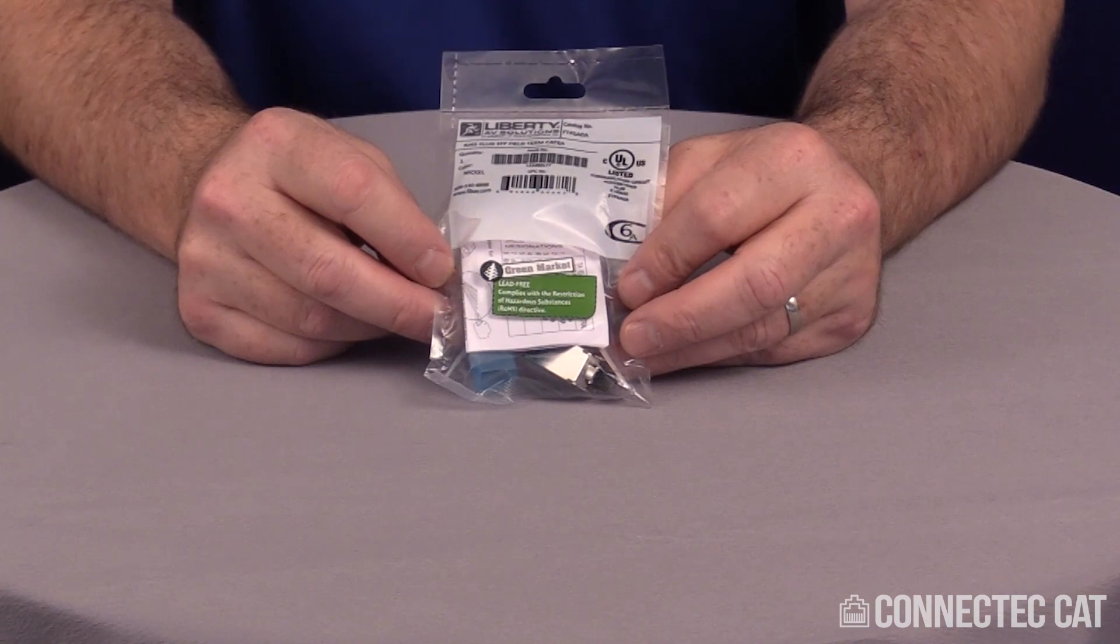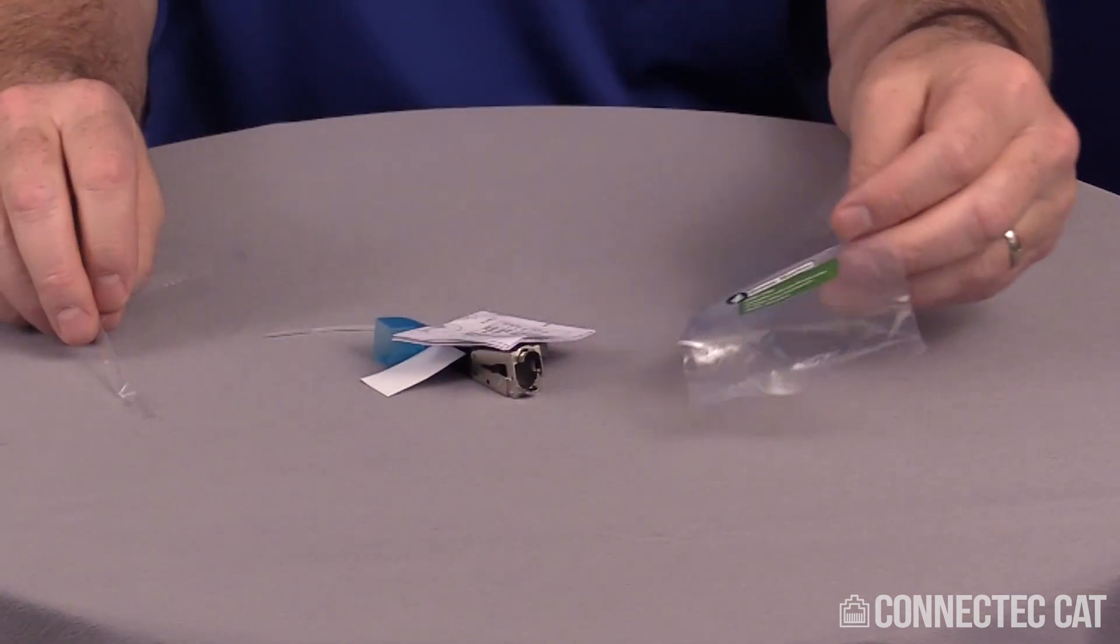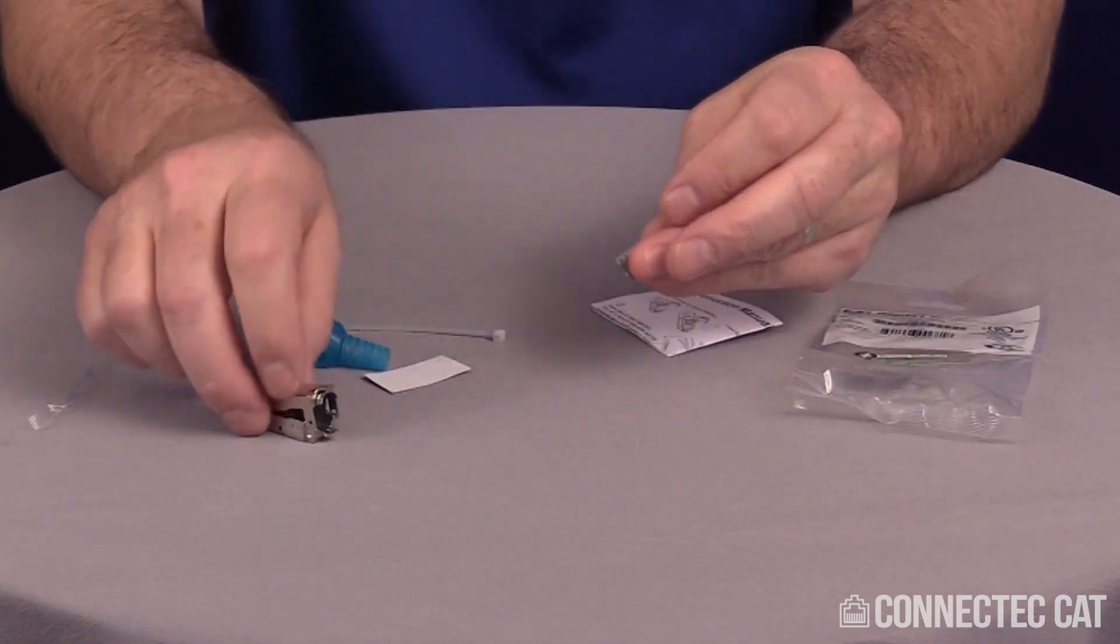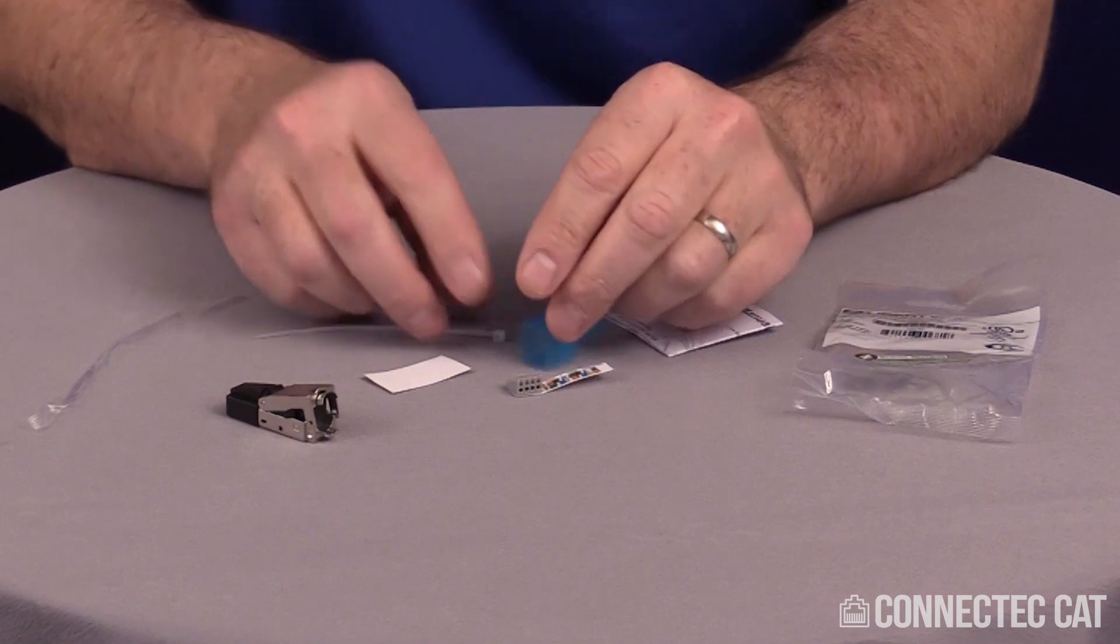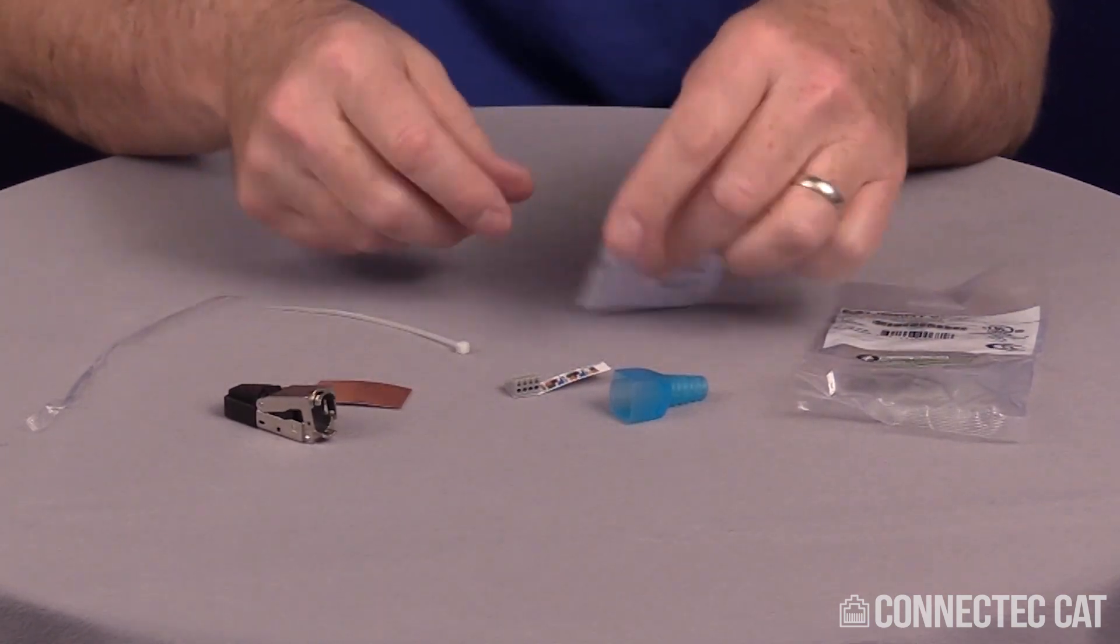When you get your connector it'll be individually packaged with a little zip peel on the side. You can dump all the contents. You'll have a connector body, a load bar, a cable boot, a piece of copper tape, a twist tie, and the instructions.